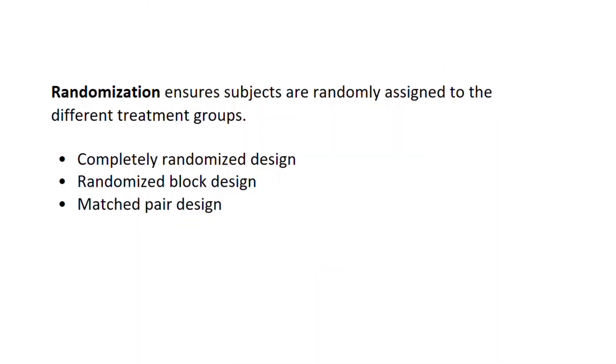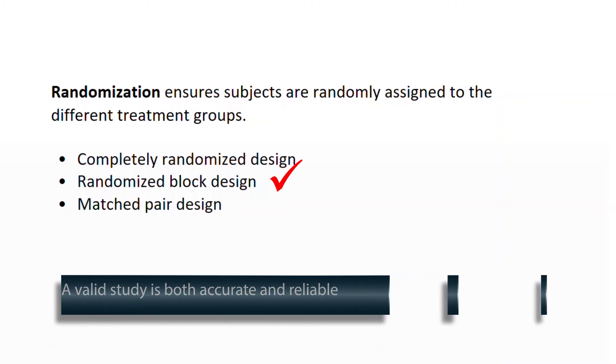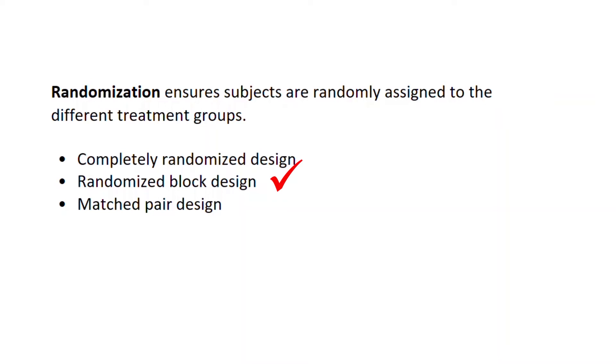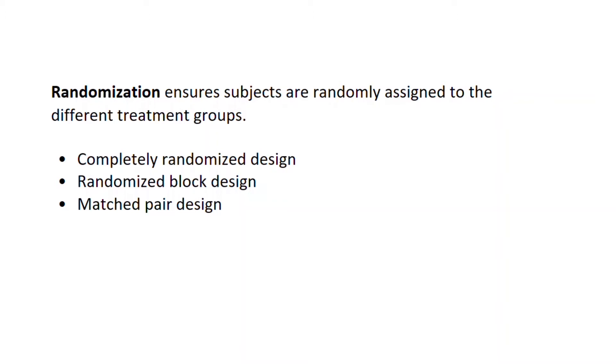Randomization is the process of randomly assigning subjects to different groups like the control group or the treatment group. In a completely randomized design, subjects are sorted out completely randomly. But sometimes it might be necessary for the experimenter to put people in blocks or groups. The experimenter might want to do that by age or perhaps by gender. That's sometimes called the randomized block design. In other designs there might be matched pair designs where the experimenters try to match each subject, one with a treatment and one without a treatment or one with a placebo.